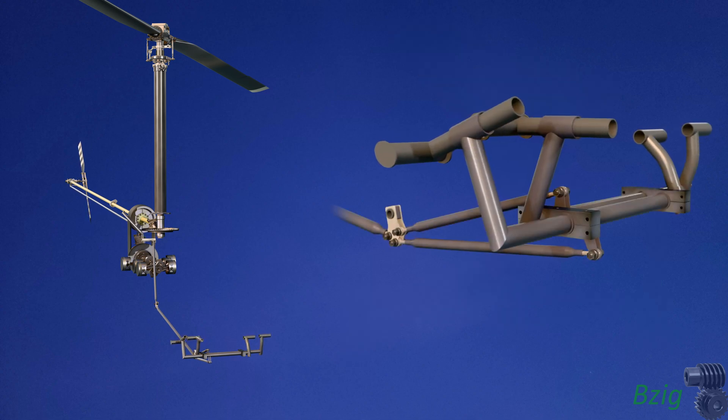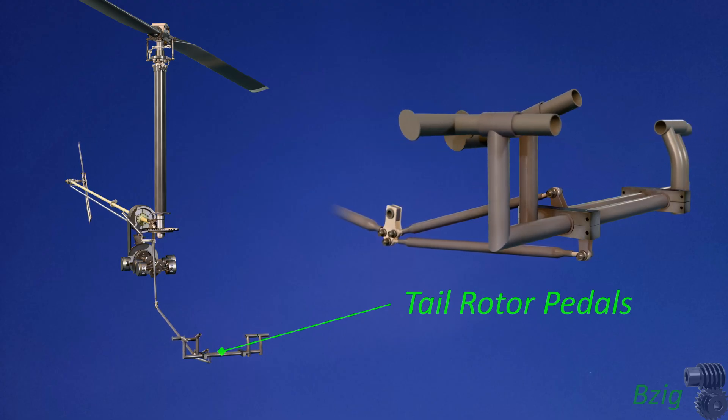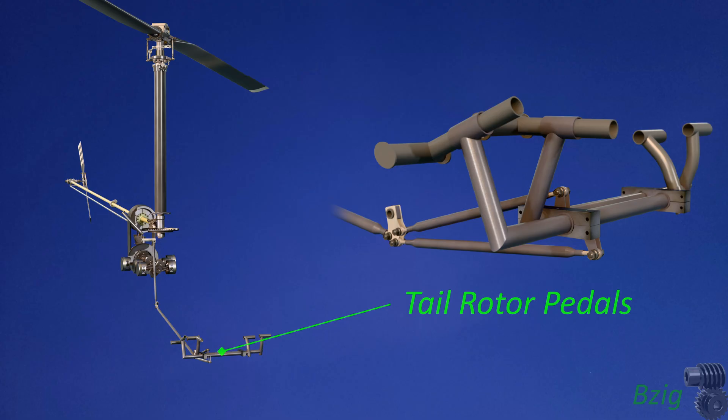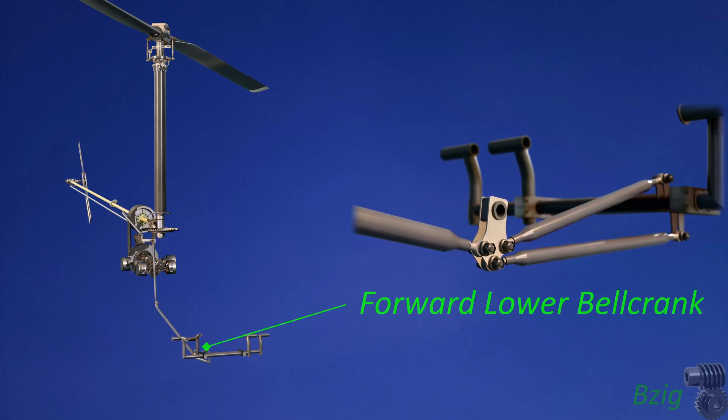Tail rotor control starts with pilot input to the pedals in the cockpit. Both the pilot and the co-pilot each have a left and right tail rotor pedal, and the left and right tail rotor pedals each have a separate pivot assembly that connects to the forward lower bell crank.